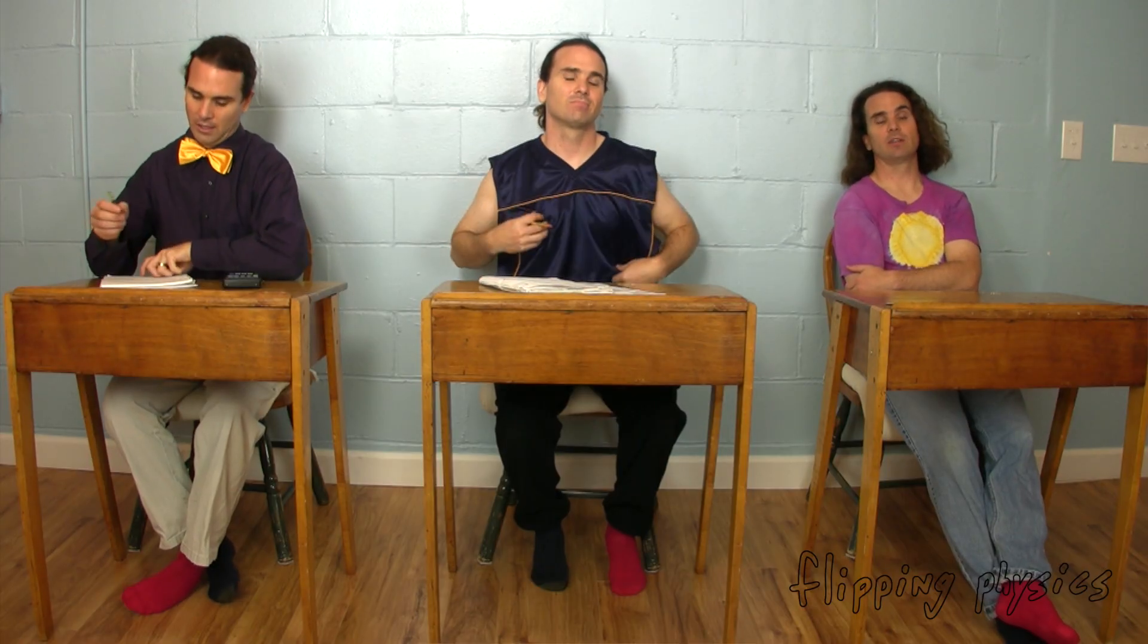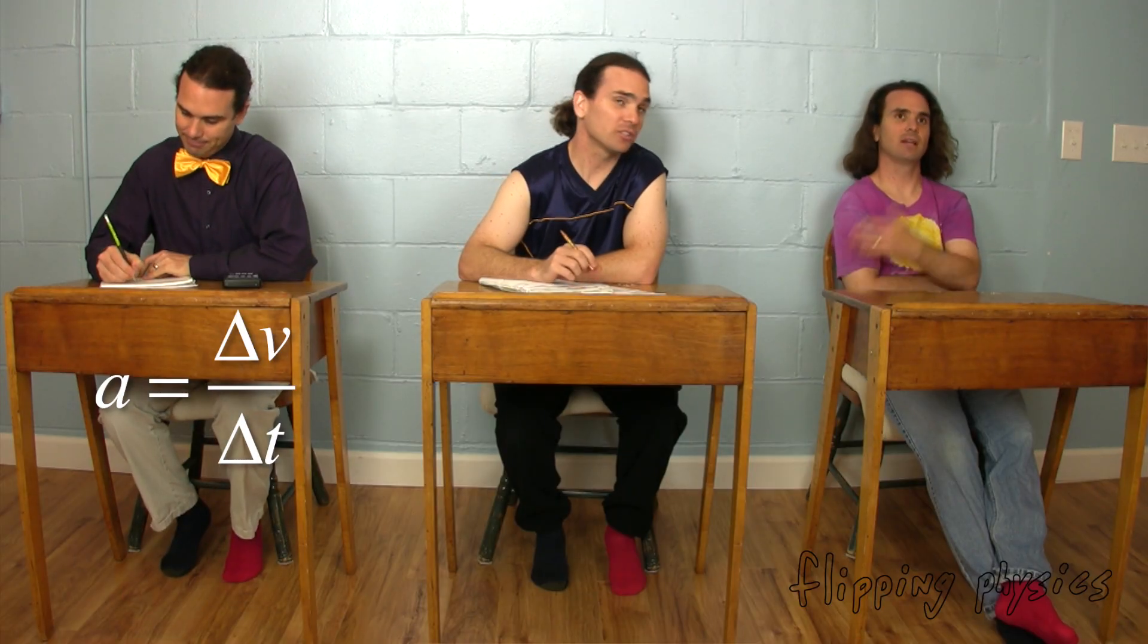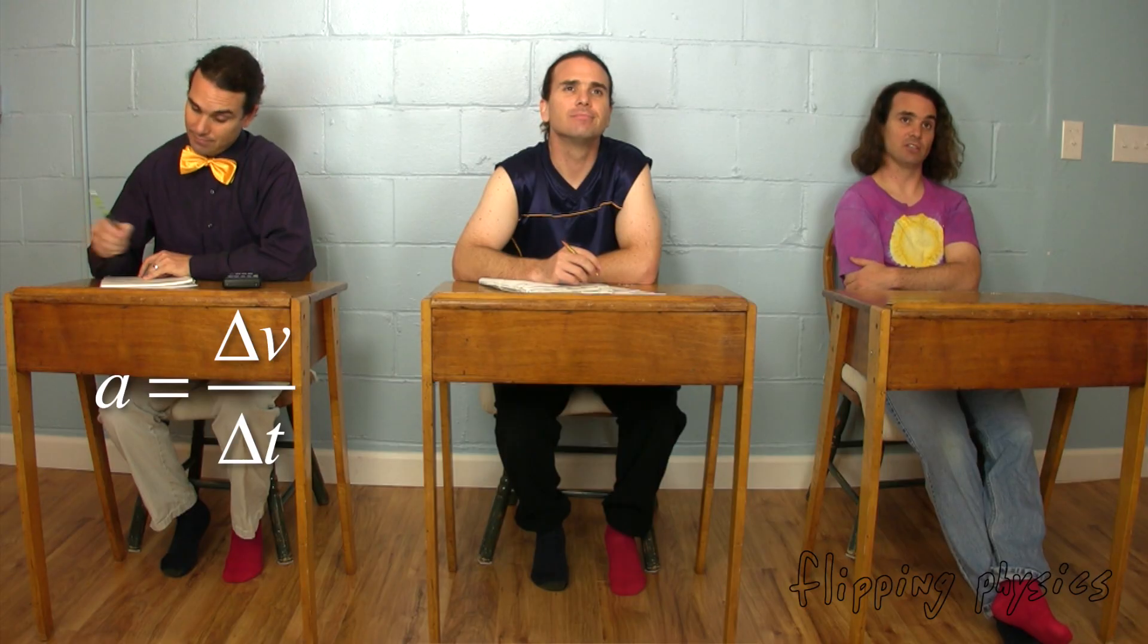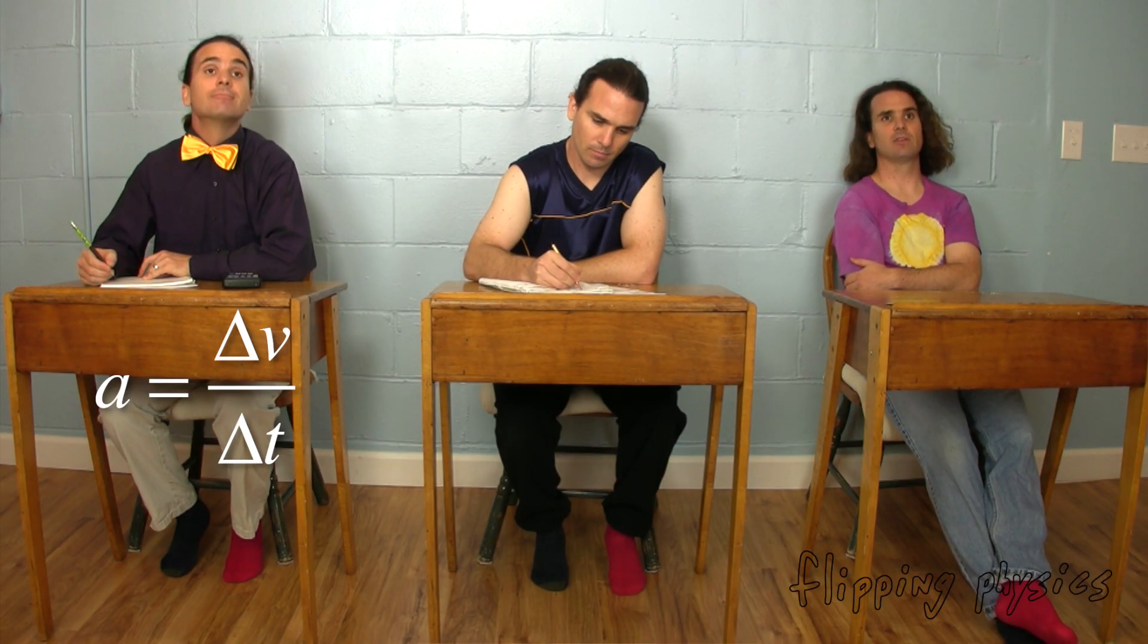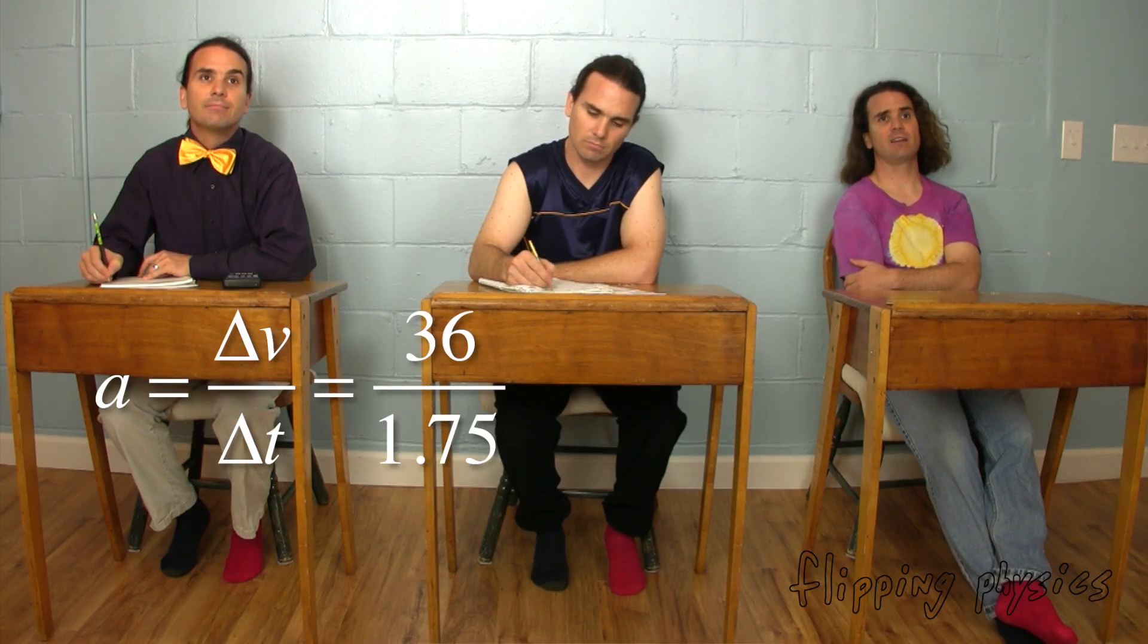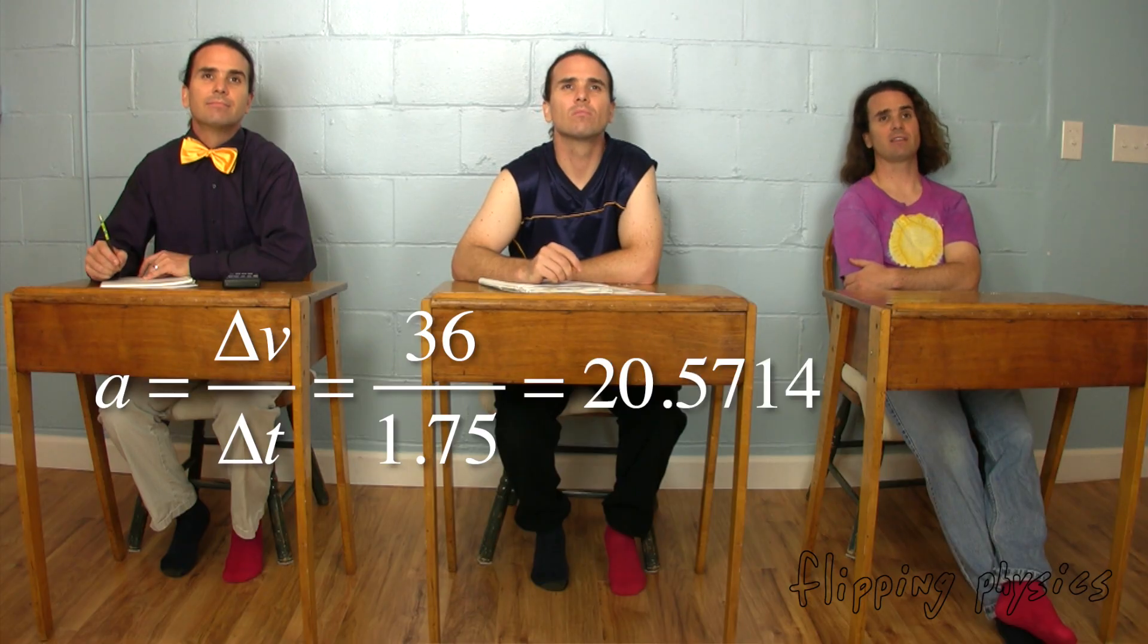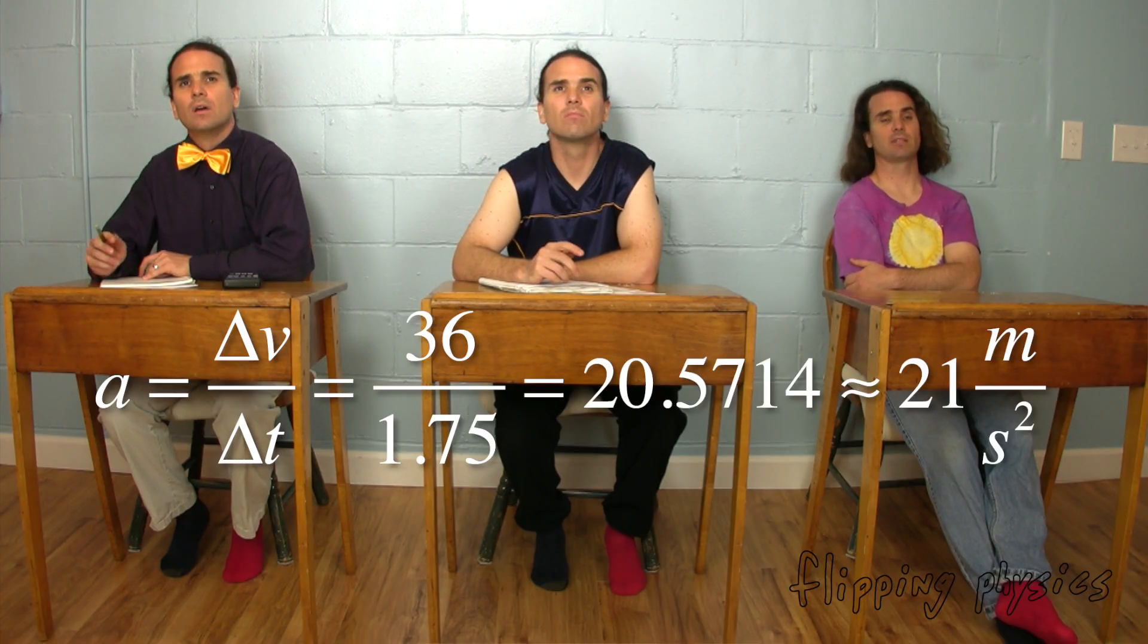Again, we need to start with the equation a equals delta v over delta t. Remember words, not letters. Yeah. Sorry. Acceleration equals the change in velocity over the change in time. And we know both of those numbers, so we can just plug in the numbers. 36 over 1.75 and that gives us 20.5714. Or with two sig figs, 21 meters per second squared.